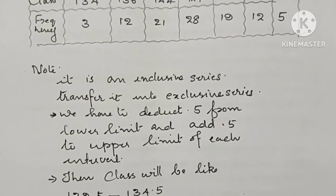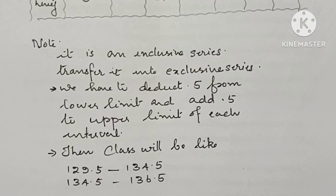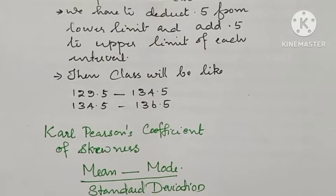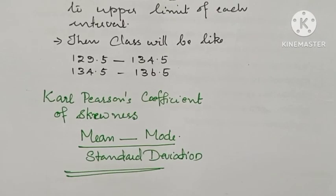Then the class 130 to 134 will be 129.5 to 134.5, and 135 to 139 will be 134.5 to 139.5.